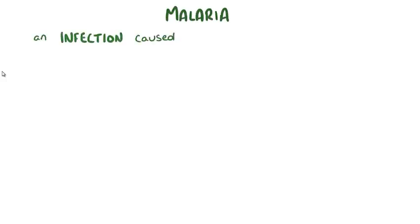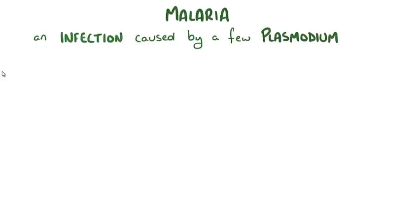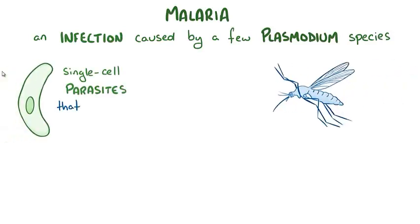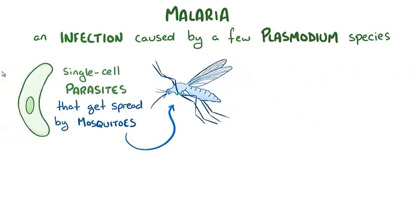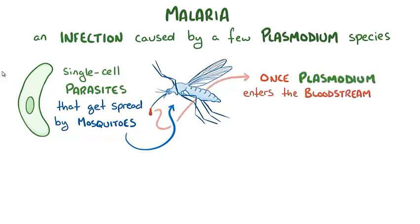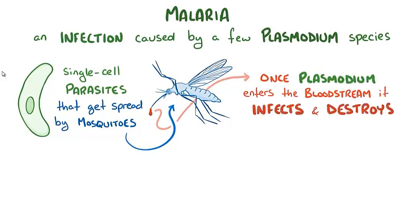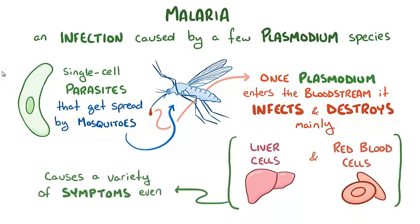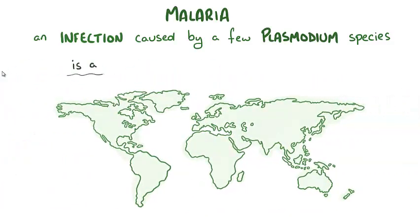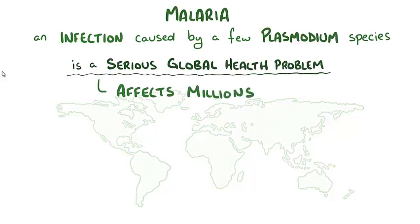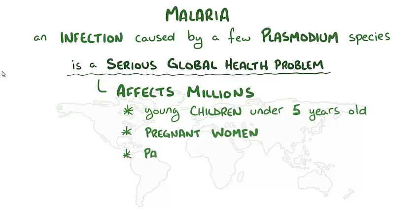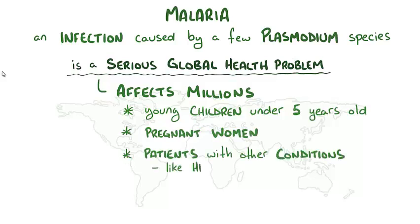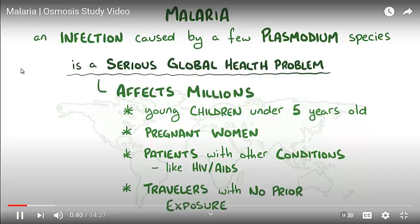Malaria is an infection that can be caused by a few different types of plasmodium species, which are single-celled parasites spread by mosquitoes. Once plasmodium gets into the bloodstream, it starts to infect and destroy mainly liver cells and red blood cells, causing a variety of symptoms and sometimes death. Malaria is a serious global health problem affecting millions of people, particularly young children under five, pregnant women, patients with HIV/AIDS, and travelers with no prior exposure.